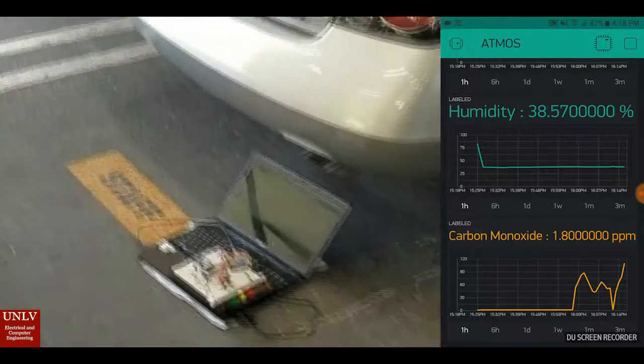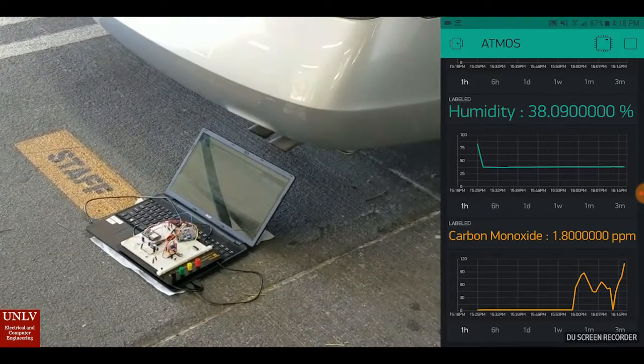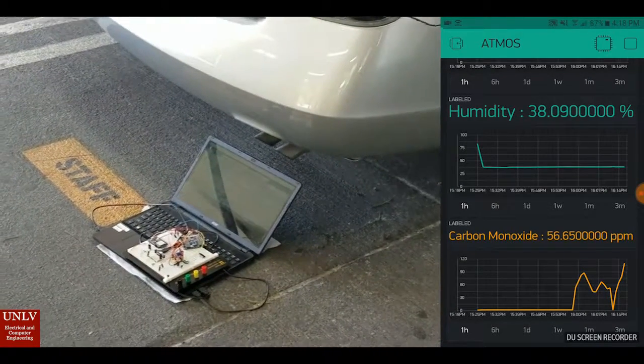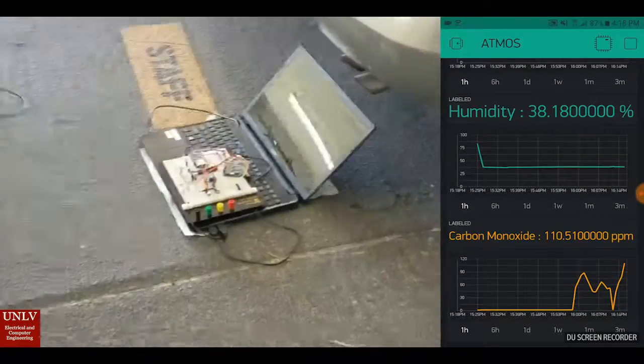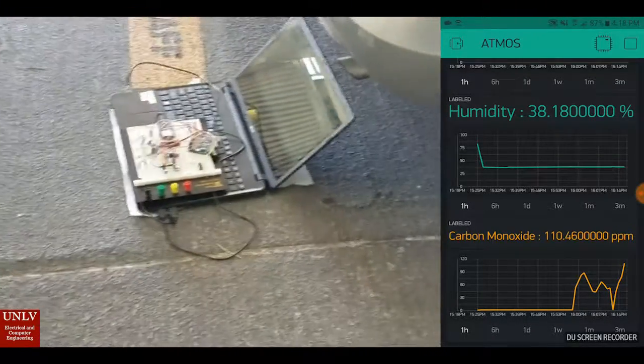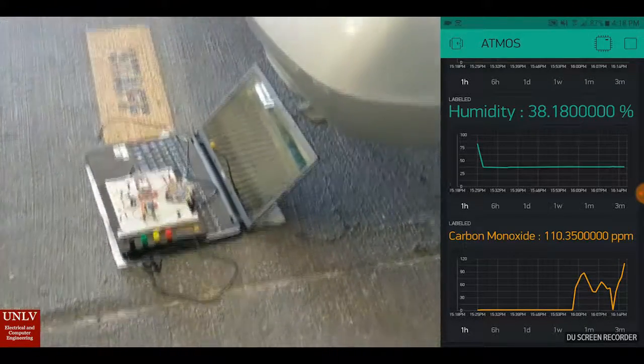Here we have a demo of the carbon monoxide sensor. In this scenario, using a car exhaust, we will examine a change in carbon monoxide using a measurement in parts per million. The parts per million measurement for a car exhaust should be around 100 to 200 parts per million.